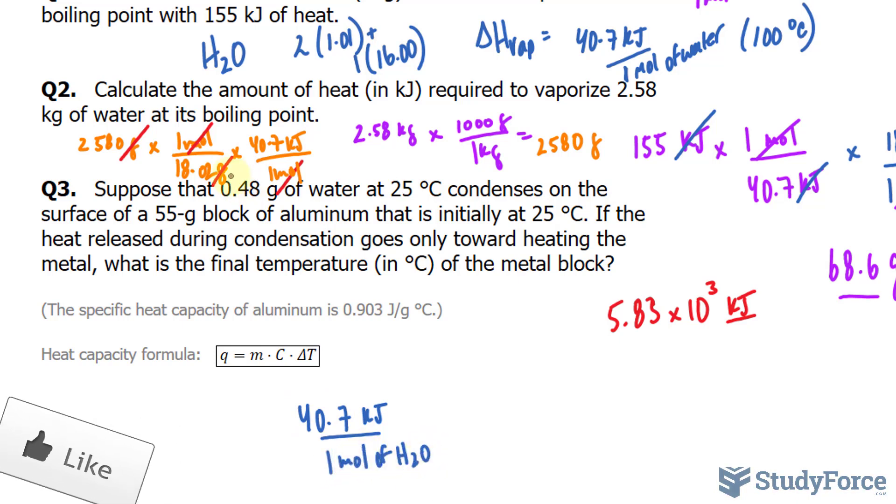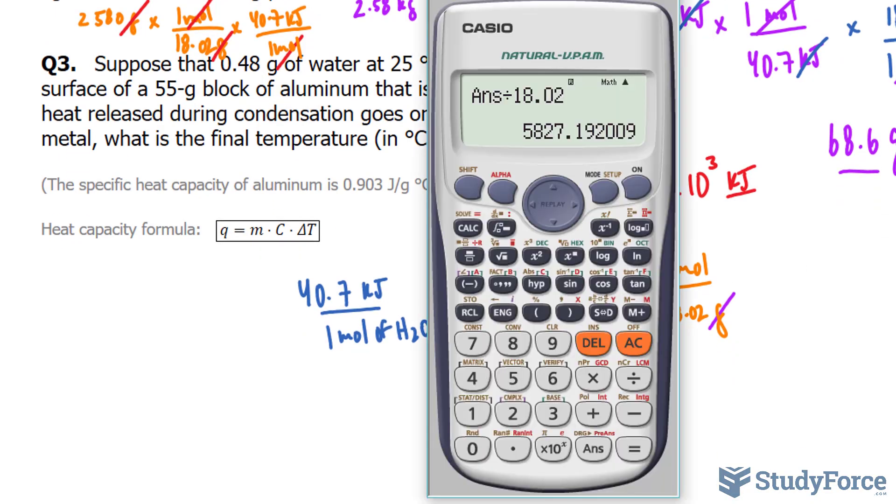We're told that the mass of water is 0.48 grams. Using this mass and the molar mass of water, we can find out the amount of moles. Once we find the amount of moles, we can multiply it to this number and we'll get the energy in kilojoules. So 0.48 grams will be multiplied to the molar mass of water, which we found in part one was 18.02 grams per mole. I'll put down one mole at the top and 18.02 grams at the bottom. Notice that the grams unit will cancel out.